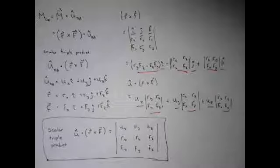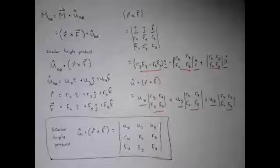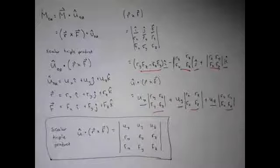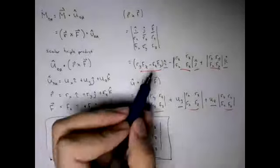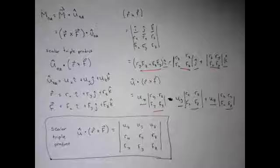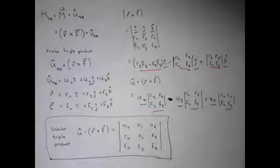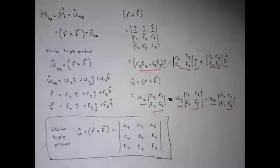Are there any questions regarding the scalar triple product or moments in general? A student asks why there's no minus sign for Uy — good observation, there should be, because that term carries a negative sign. Another student asks if the scalar triple product is also called the box product — I've only heard it called the scalar triple product, but I'll look into that. Any final questions? If not, let's stop our three-dimensional moment discussion here and move on to some other topics.